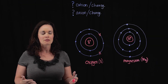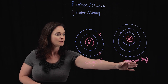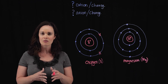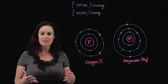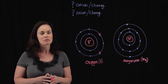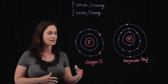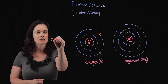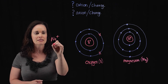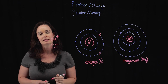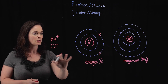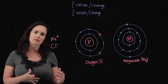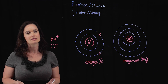Now I'm going to give you another example to work with. I have an oxygen atom and a magnesium atom here. I want you to look at what's going on in the valence shell and determine how these atoms will interact. One of these atoms will become an anion and one will become a cation. Identify which is which, and write out the charge notation for magnesium and for oxygen when they exchange electrons. Go ahead and pause your video now.